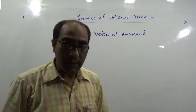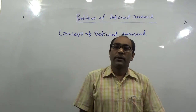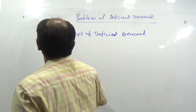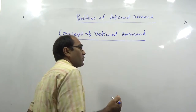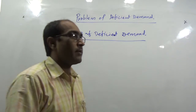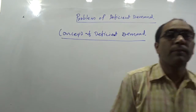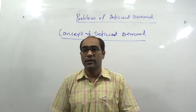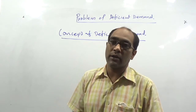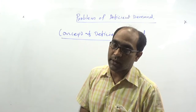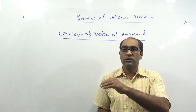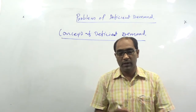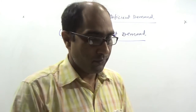In the previous class, we discussed full employment equilibrium and under-employment equilibrium. So there are two types of aggregate demand we have to discuss here. One is the plant aggregate demand, another is the aggregate demand for full employment. One is the under-employment equilibrium and another is the full employment equilibrium. Our today's topic is totally based on the difference between the two.